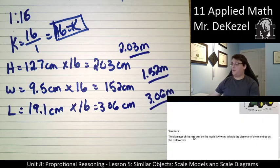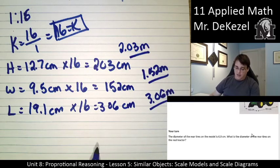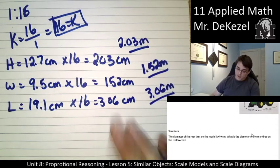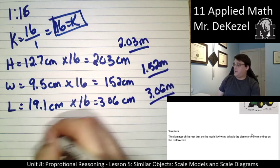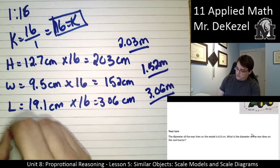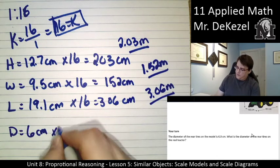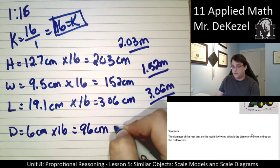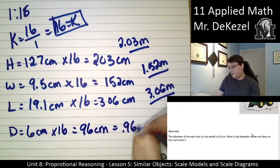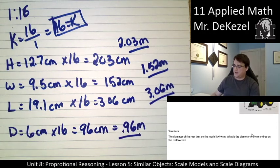There is a your turn for you to do here. It talks about the diameter of the rear tires on the model. It wants to know what the diameter of the real tires on the tractor would be. So pause it here and give it a go. The diameter of the rear tire is 6 centimeters. The diameter is not an area or a volume unit, so we can just keep using this single K factor. So we multiply by 16 to get 96 centimeters, or 0.96 meters. That is the size in real life.